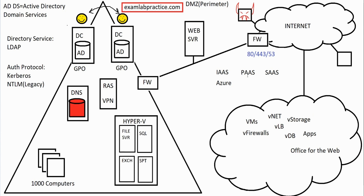Platform as a Service is a system in which the majority of the configuration is done for you, but you still have some admin configuration to do. With virtual machines — which are 100% IaaS — you are responsible for the operating system and all software on it. With PaaS, virtual machines are set up in the background that you don't control — the operating system and software are already installed — but there's still some administration you need to do.